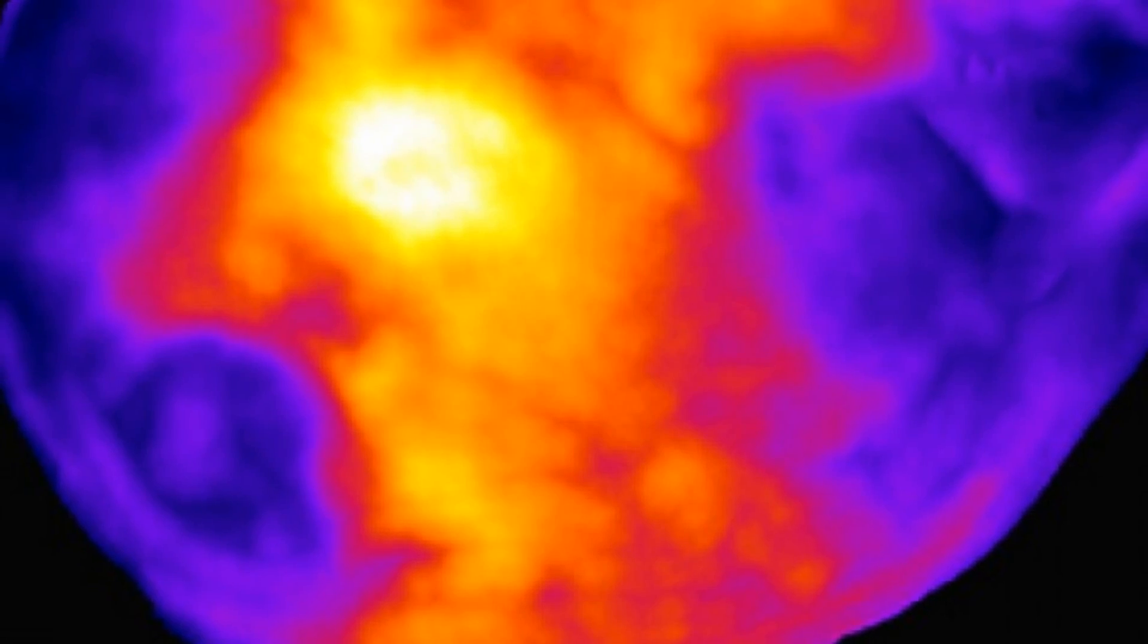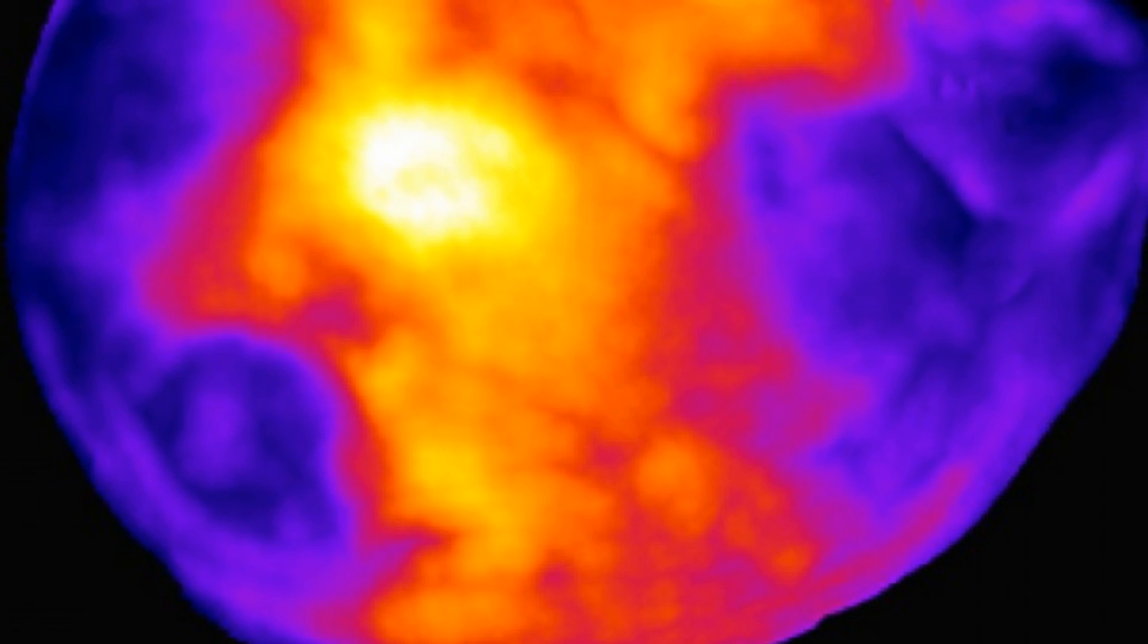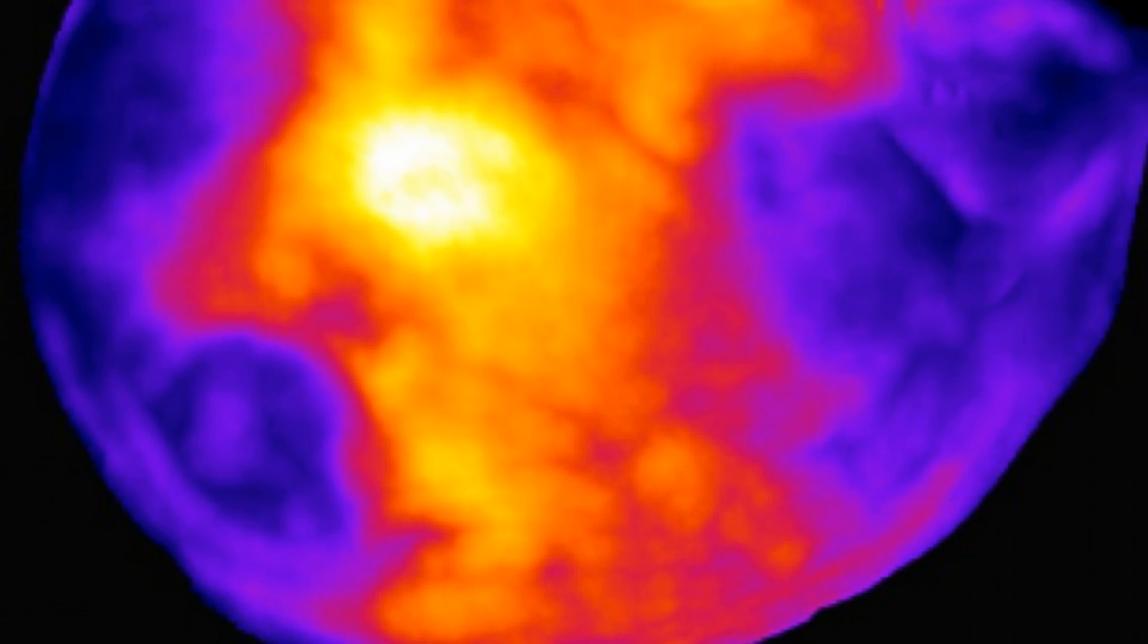Researchers have developed a new technique that enables them to take a snapshot of the activity of an entire brain. Conventional methods allow activity in small areas of the brain to be studied in detail. Imaging the activity of the whole brain is possible, but without that same level of detail. Until now, that is.